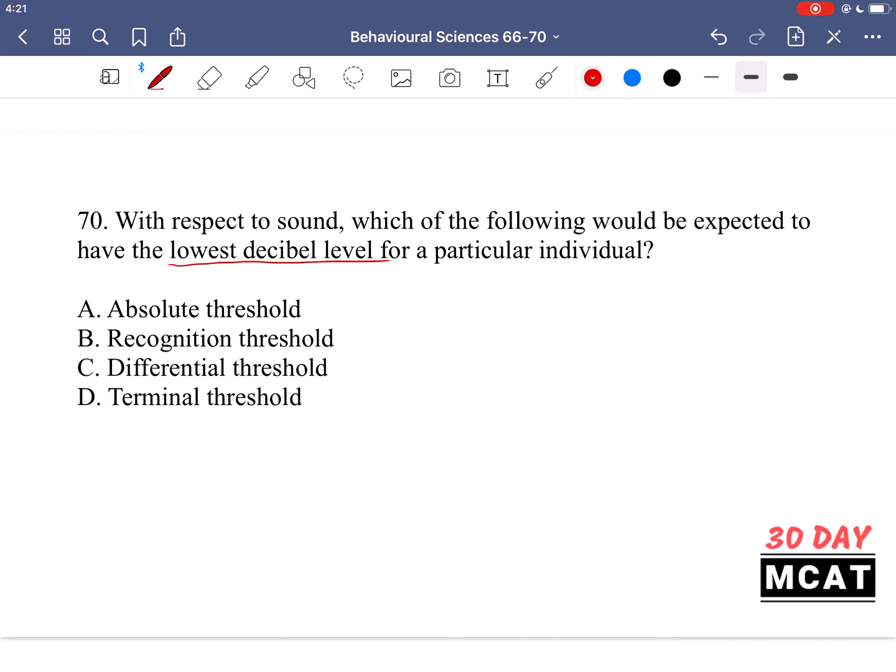And finally, D, the terminal threshold. That's the highest decibel level that this individual's ear can even detect. After that, it's not a range which the ears can even pick up. It's ultrasonic. So all of these are much higher. A would be the lowest decibel level because this is the lowest level you can even detect. So A is the correct answer here.